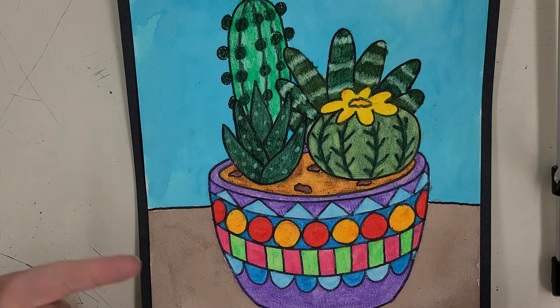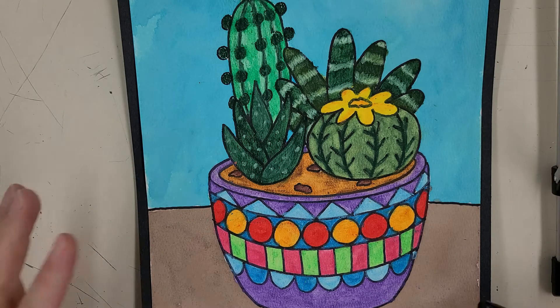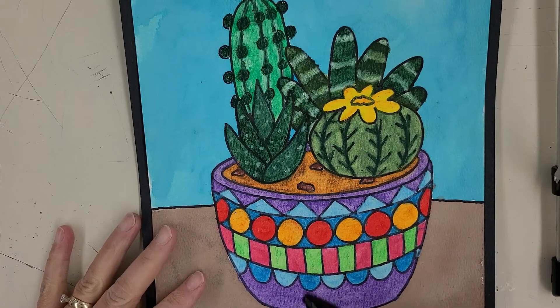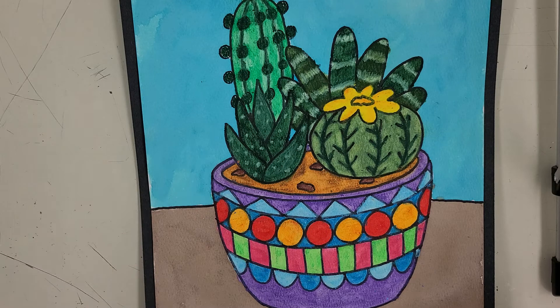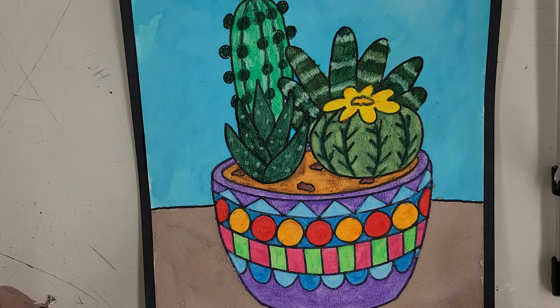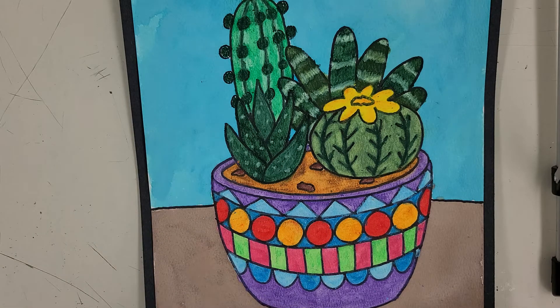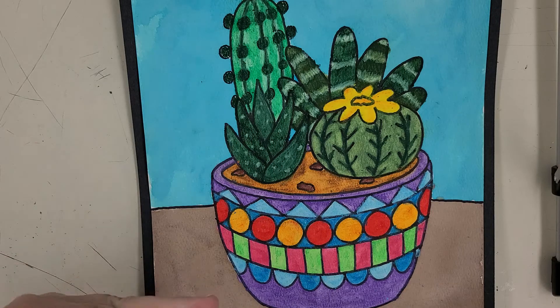So what I want you to focus on with this video is drawing a cylinder. If you look at the pot, that's basically what this is. A cylinder is a three-dimensional form. It has height, width, and depth. I'm going to show you how to draw this basic form right down here.